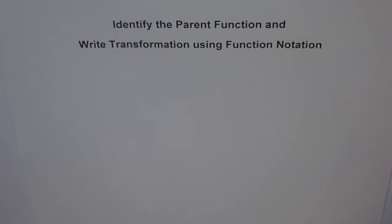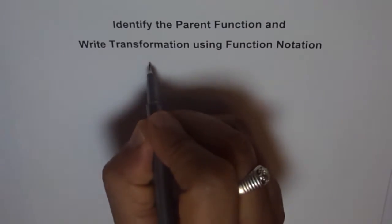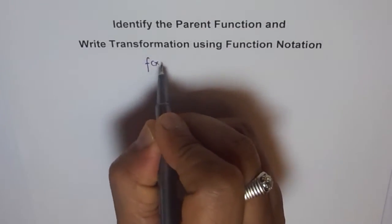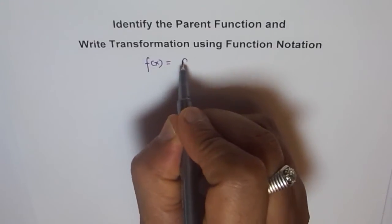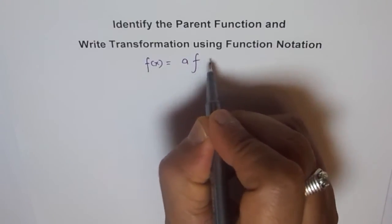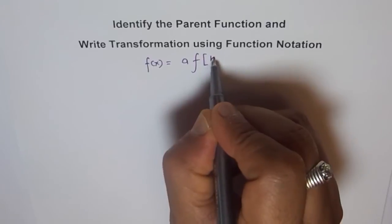So let me first give you the function notation form of a transformed function. We normally write like this: f(x) equals a times f of, within square brackets, k times